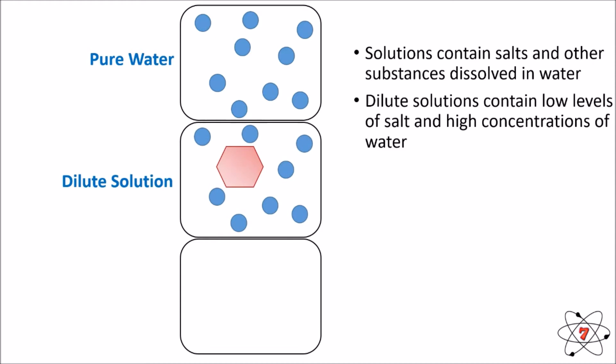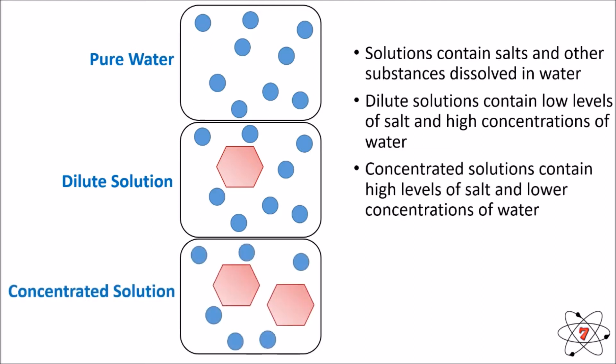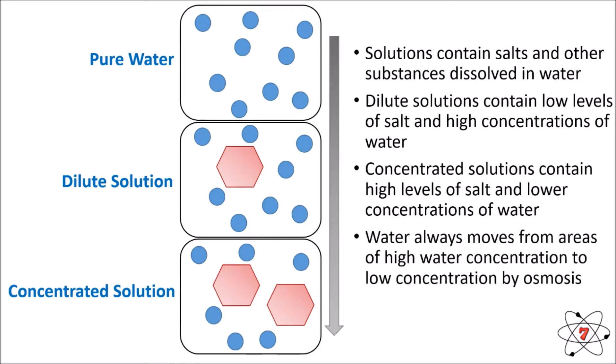We can have dilute solutions, which contain low levels of salt but high concentrations of water. Finally, we can have concentrated solutions, which contain high levels of salt, sugar, or whatever else is dissolved in them, but lower concentrations of water. If these three types were put next to each other, water would diffuse by osmosis from a high concentration of water to a low concentration of water.